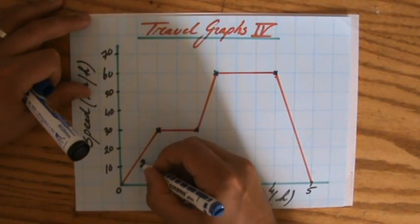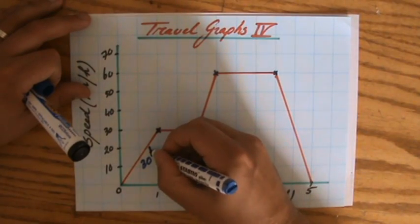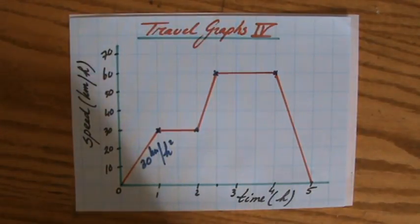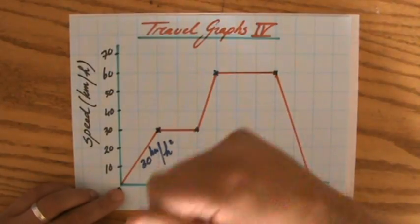If you do that properly you are going to get 30, and the unit is kilometers per hour squared in this case. The acceleration is 30.